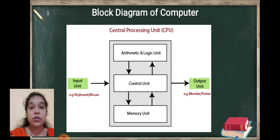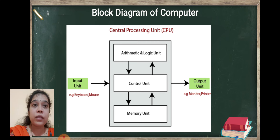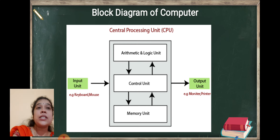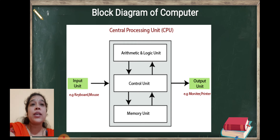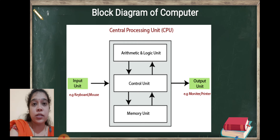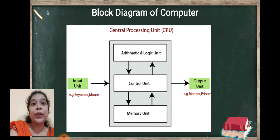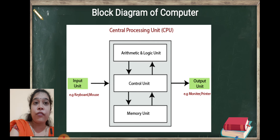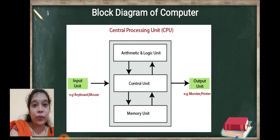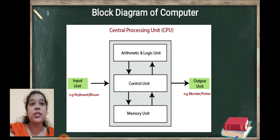What is the CPU — central processing unit? It is divided into three subunits: first is the arithmetic logical unit, second is the control unit, and third is the memory unit.